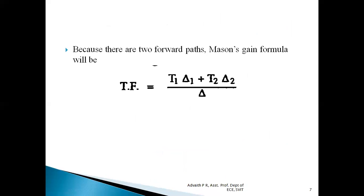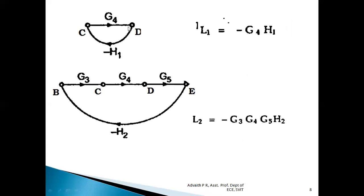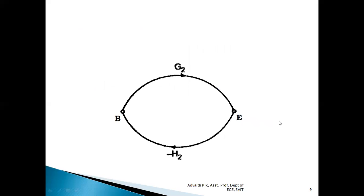The three loops are clearly identified. Loop 1 is C→D→C, with loop gain G4·(−H1) = −G4·H1. Loop 2 path is B→C→D→E→B, with gain G3·G4·G5·(−H2) = −G3·G4·G5·H2. Loop 3 path is B→E→B, with gain G2·(−H2) = −G2·H2.